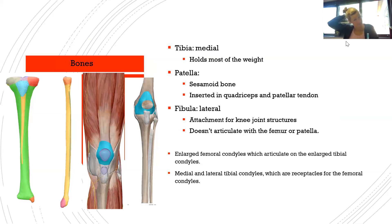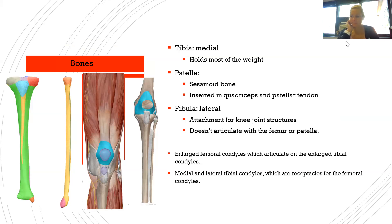The patella is highlighted in blue — it is a sesamoid bone, a type of short bone as discussed in previous lectures, and is inserted in the quadriceps and patellar tendon. The fibula, shown in yellow on the lateral side, serves as an attachment for knee joint structures and does not articulate with the femur or patella.